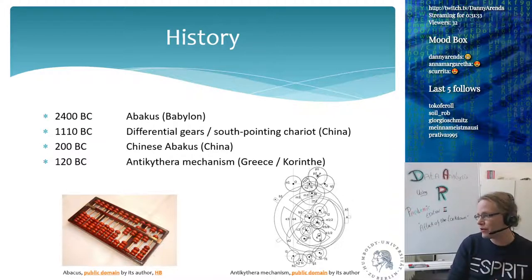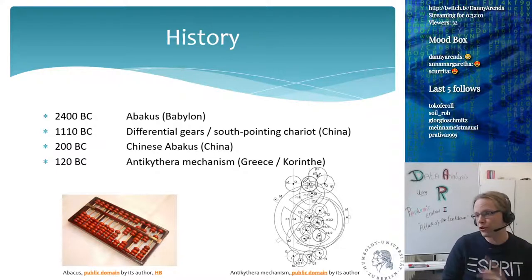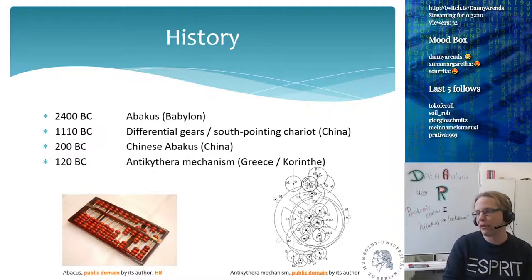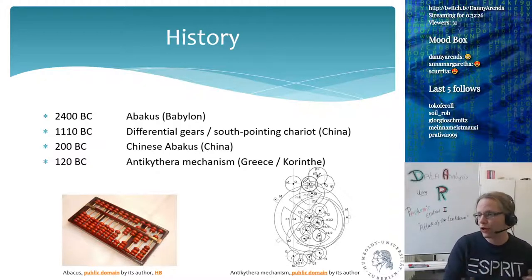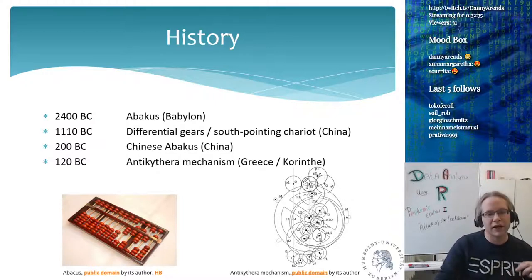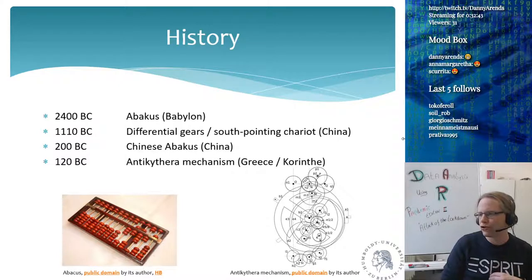In 120 BC we have the Antikythera mechanism — just a hunk of corroded metal in a museum, but using x-rays they figured out how it looked. It's similar to a differential gear, with all kinds of little gears and knobs, and it was used for ship navigation. Navigation is important because the planet is a big bowl, not flat, and it's hard to determine exactly where you are.